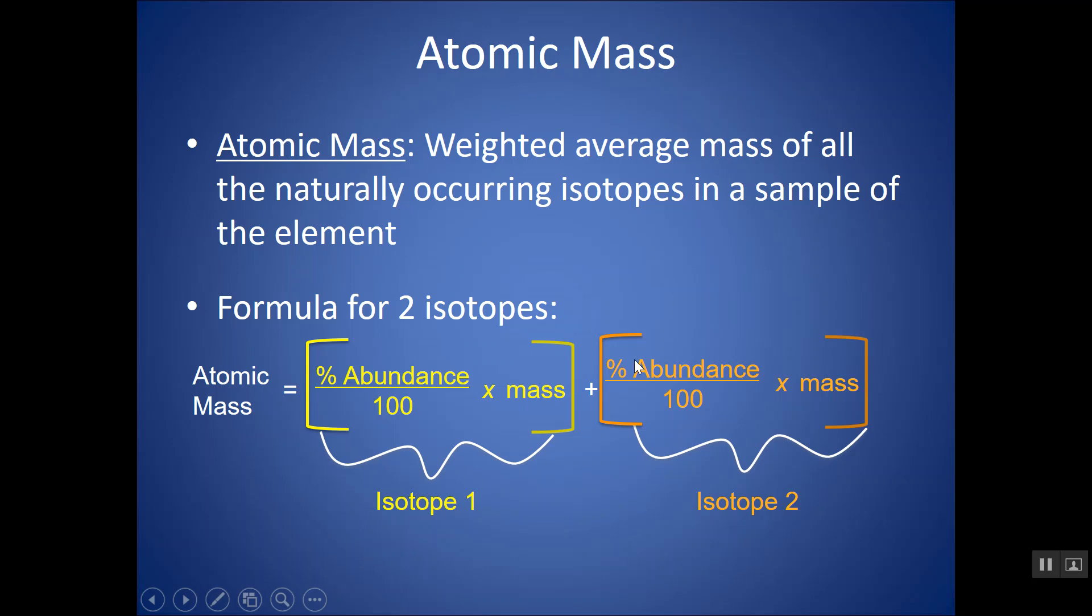You would find the percent abundance, put that over 100, and multiply by the mass of the second isotope. Notice that I have parentheses around these two things. So you would want to do this operation first, where you take the percent abundance over 100 times the mass, and do it for the second isotope, and then you add them together. If you had a third isotope, you'd have a third term here. And you can do this in your calculator all in one step, but if you do, make sure you do put the parentheses.